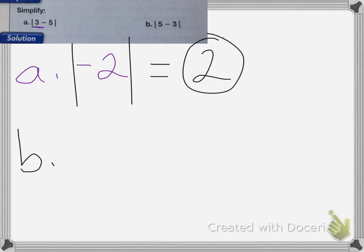On B, it's going to be 5 minus 3, which is 2. And the absolute value of 2 is equal to 2.